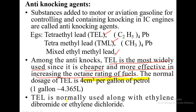Tetraethyl lead is normally used along with ethylene dibromide or ethylene dichloride. Whenever we are using tetraethyl lead, it is always recommended to use it along with either ethylene dibromide or ethylene dichloride whenever it is used as an anti-knocking agent.